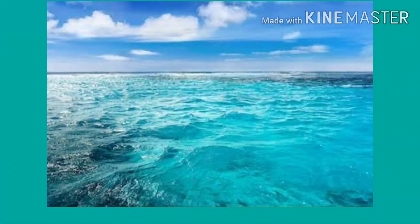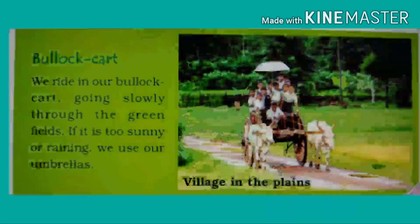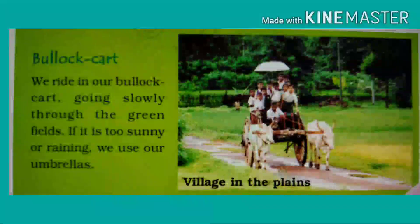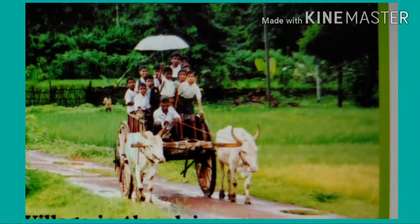Now let's know about the next topic: introduction of bullock cart. Children of villages in the plains ride in a bullock cart. They use it for going slowly through the green fields. If it is too sunny or rainy, they use their umbrellas also. The main parts of a bullock cart are two oxen or any animals, two wooden wheels, and a wooden load carrier.